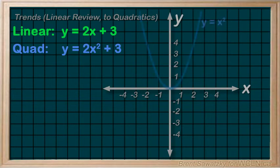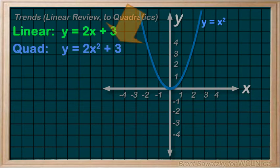The base graph of the quadratic is y = x². Again, we note that a number at the end here shifts the graph vertically, or up or down. In this case, it goes up by 3.